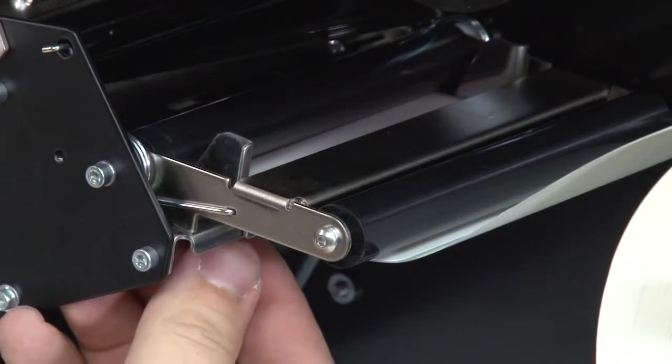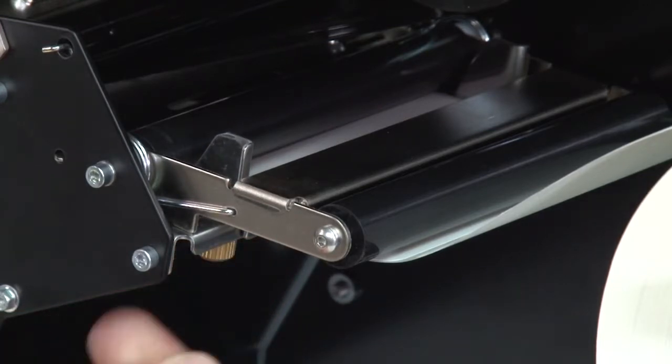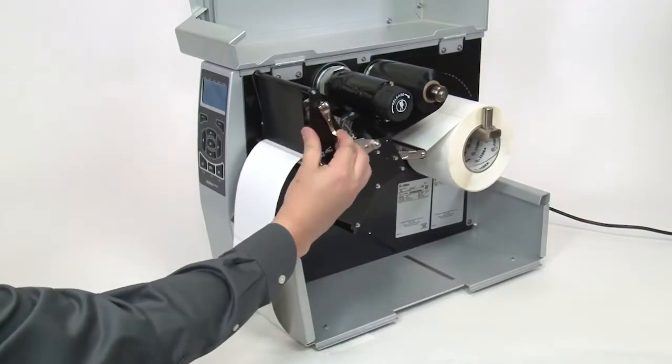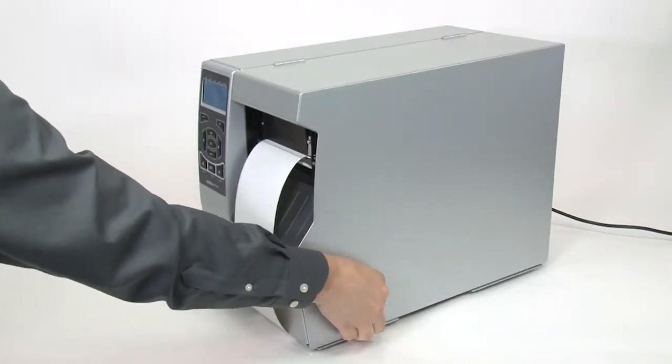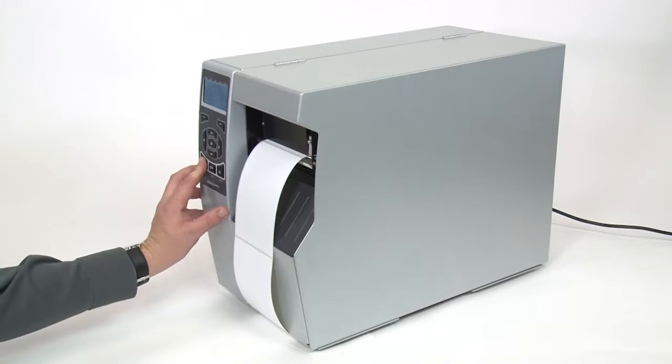Slide in the media supply guide until it touches the media and tighten the thumb screw. Close the printhead and close the media door. Press pause to enable printing.